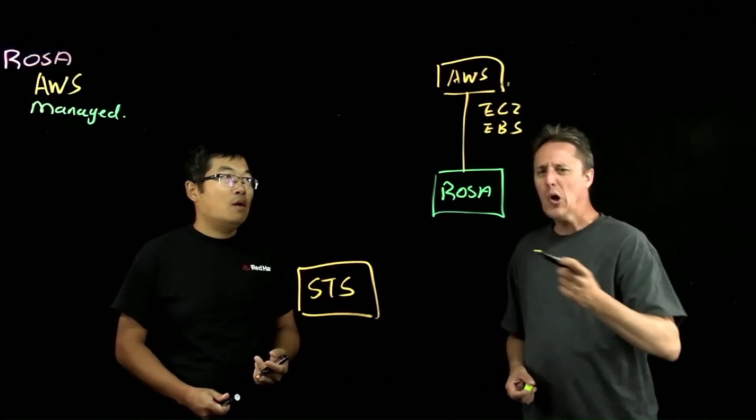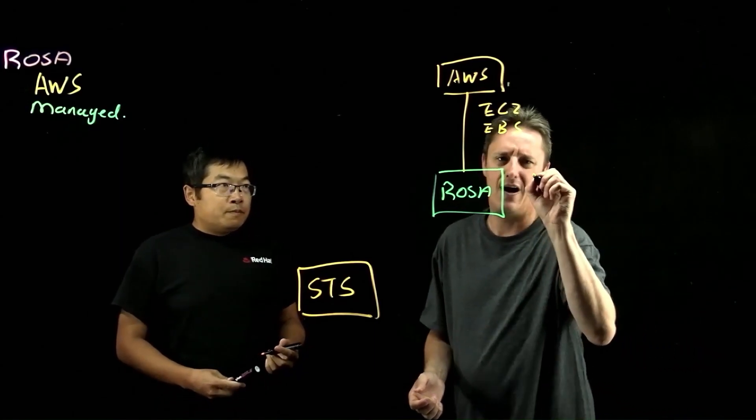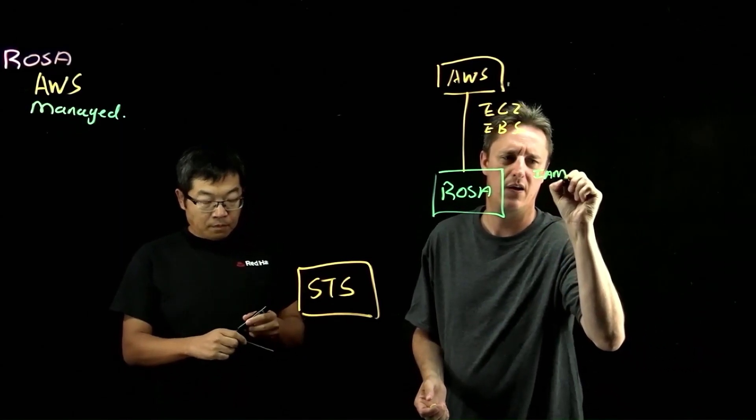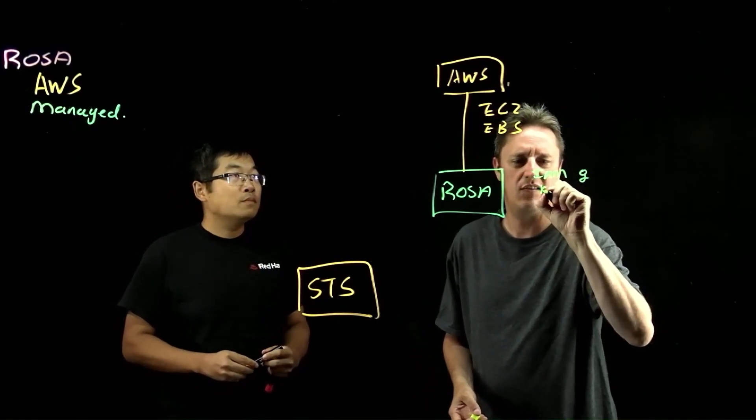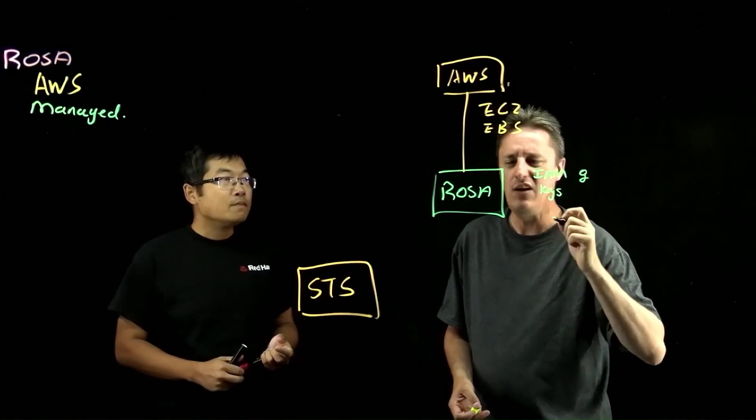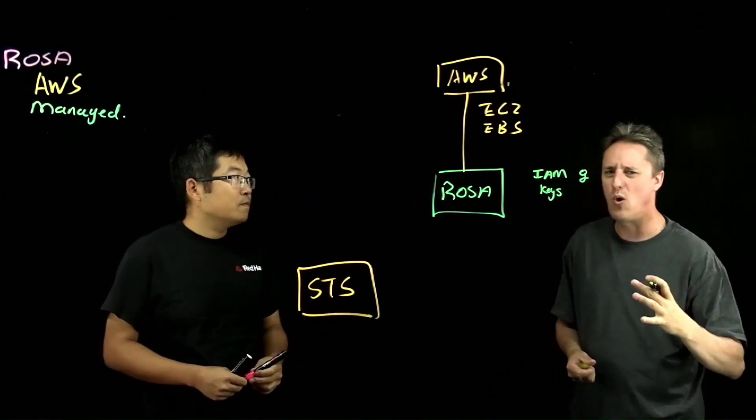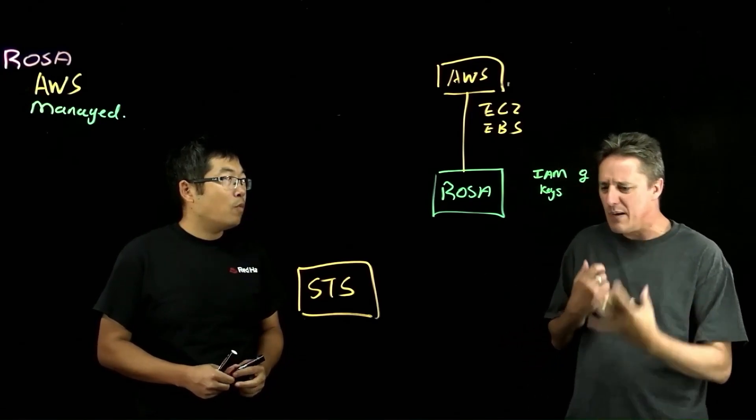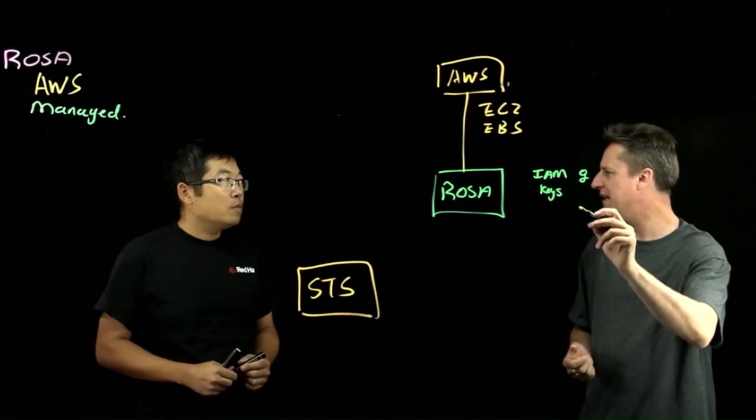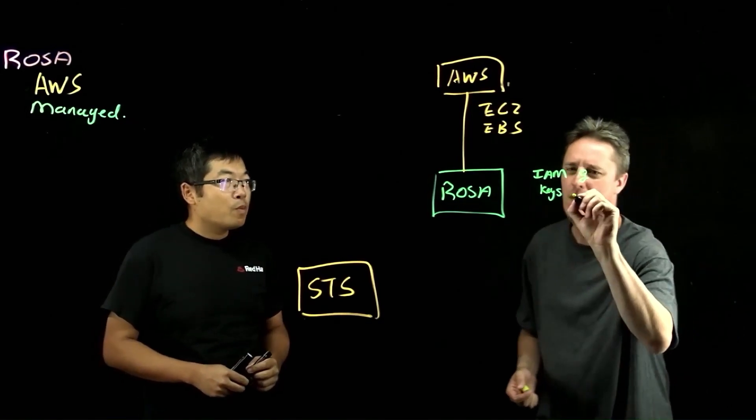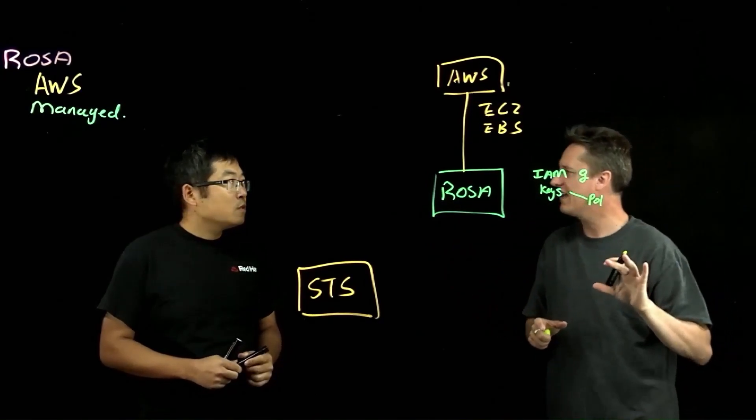So in older OpenShift implementations, we used to have an IAM user and that IAM user had a set of keys. And these keys were rather static. They never changed. This really wasn't a temporary sort of environment. Also, these would not necessarily be least privileged. It would be one massive policy for the entire OpenShift cluster.